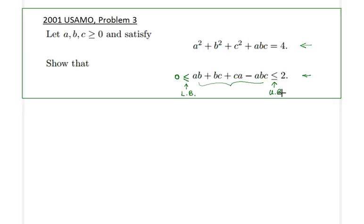Before I do that, let's make some key observations. By just looking at the equation that these three variables satisfy, it's obvious that a, b, c, let me write that down here, a, b, c are definitely less than or equal to 2.